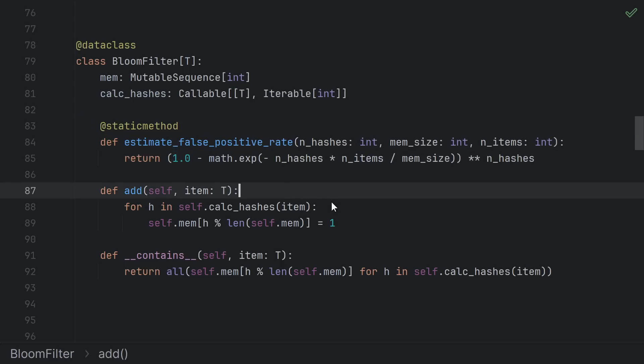Estimating the false positive rate is just plugging into the formula we had earlier in the video. Adding an element means calculating each hash and setting the corresponding bit to 1. And checking if an element is in the set means calculating each hash and checking whether any of the corresponding bits are not set.